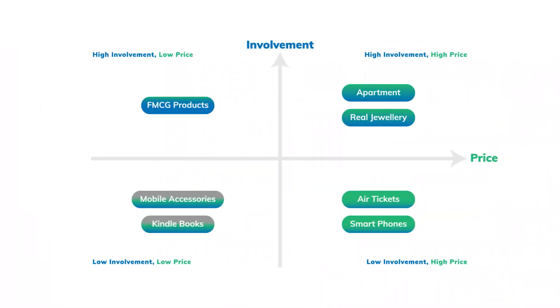Coming to quadrant 1 — this is a high price and high involvement quadrant. Multiple sectors are there in this quadrant: education, automobile, real estate, B2B, enterprise — so many sectors lie here.